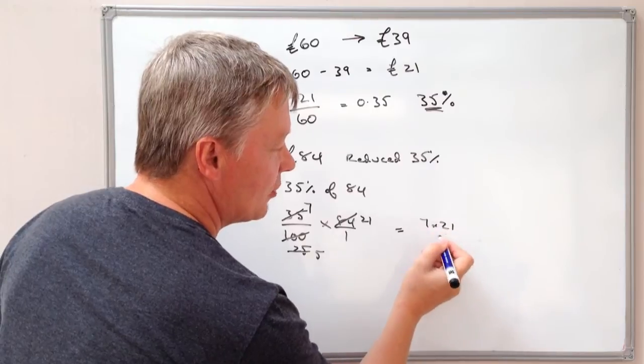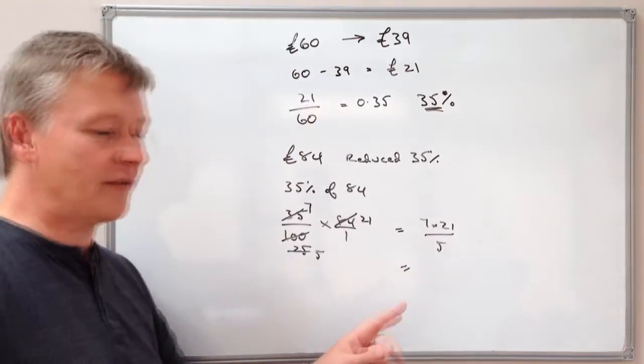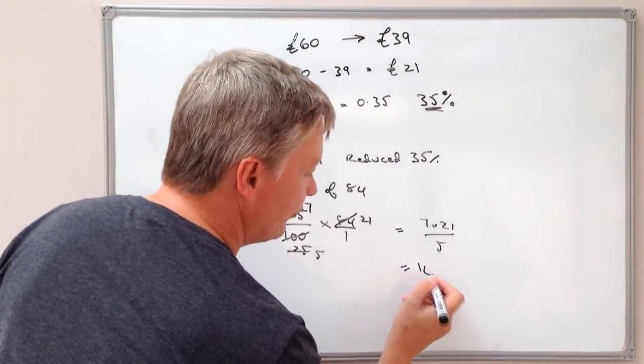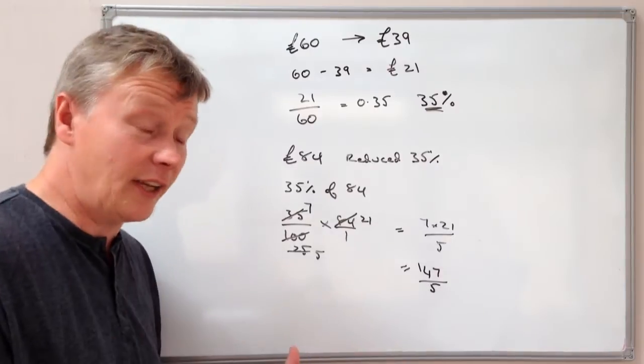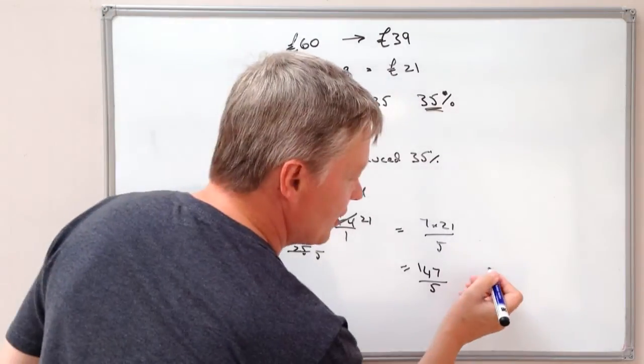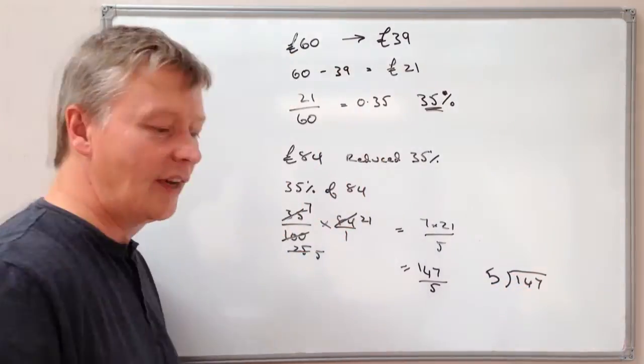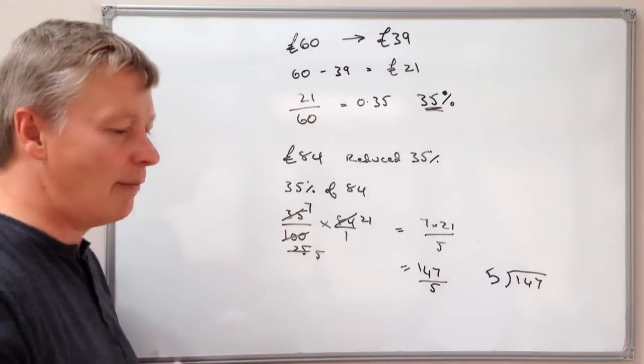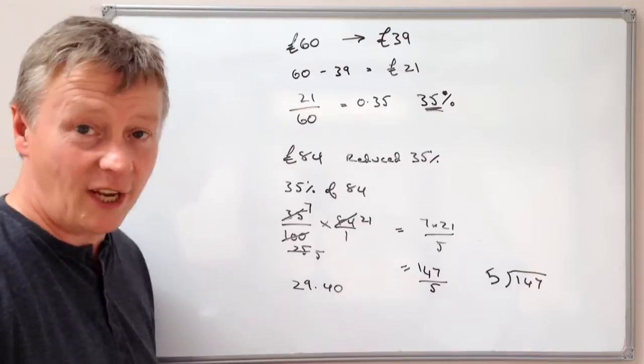So actually my calculation, which is the direct equivalent fraction, is going to be 7 times 21 divided by 5. Well that's going to equal 7 times 21 is 147 divided by 5. And then I can calculate that through by using short division. So I'm going to say how many lots of 5 are there in 147.